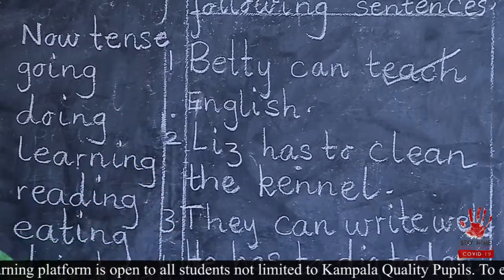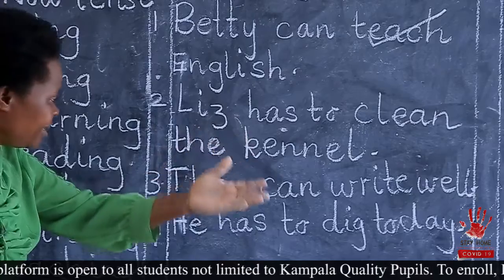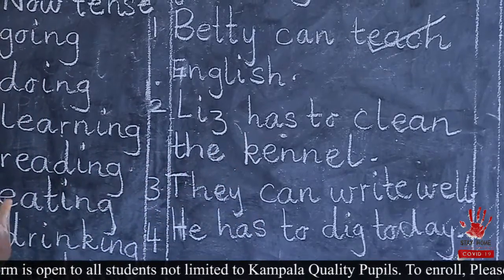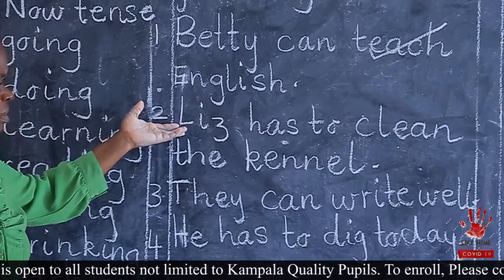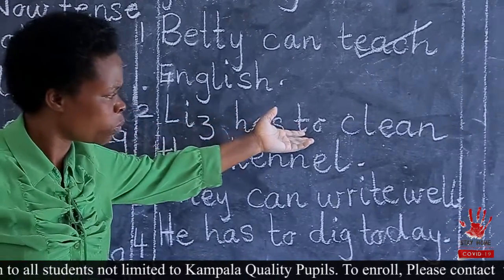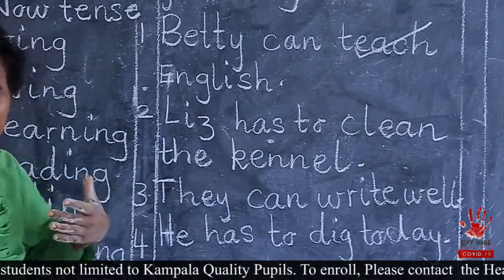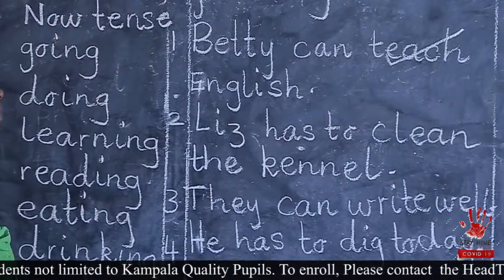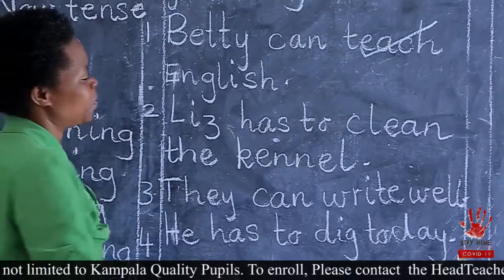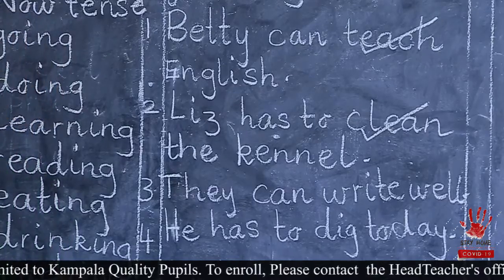We got number two. We have Liz — has to clean the kennel. Then you begin reading: Liz, has, to, clean. Which one is something to do? Someone has already identified it. Clean. Thank you so much. Clean is an action.